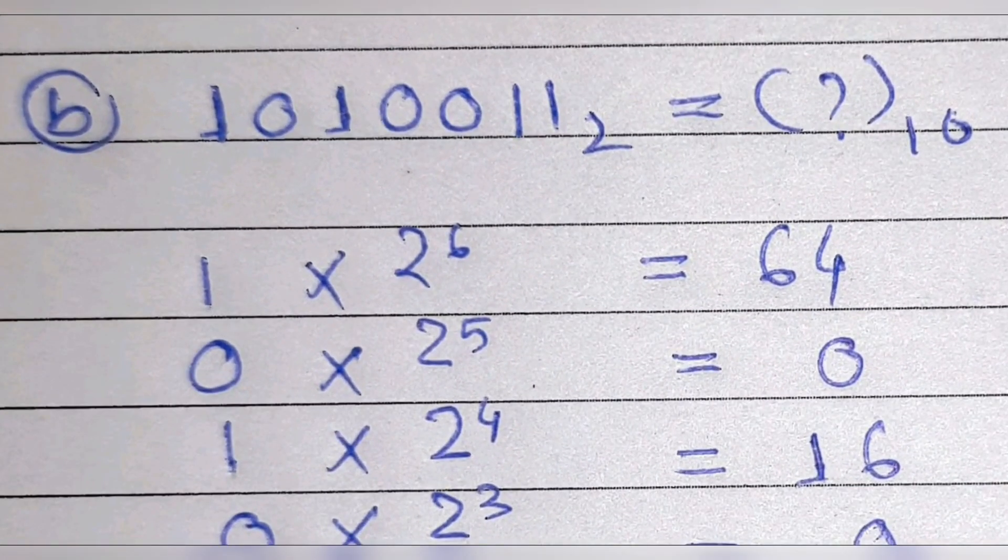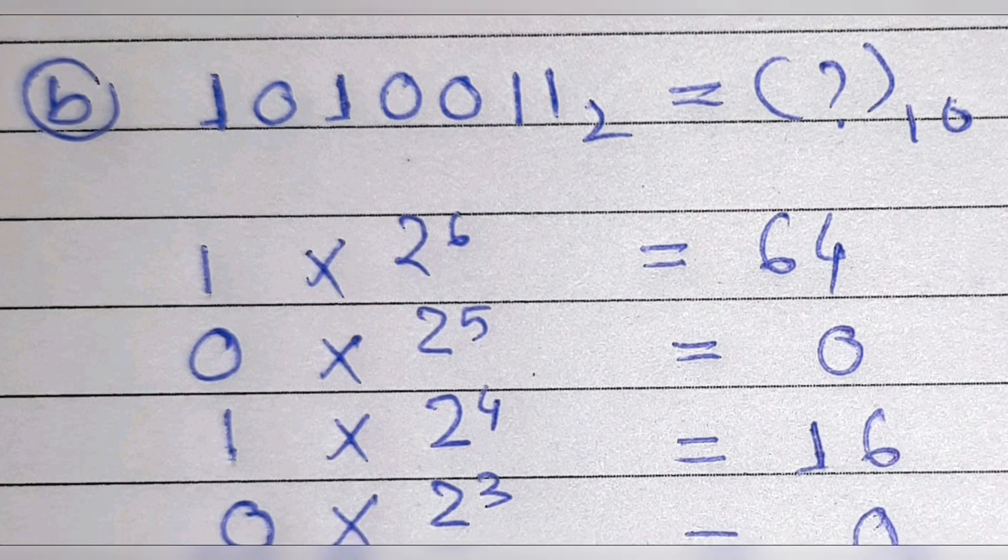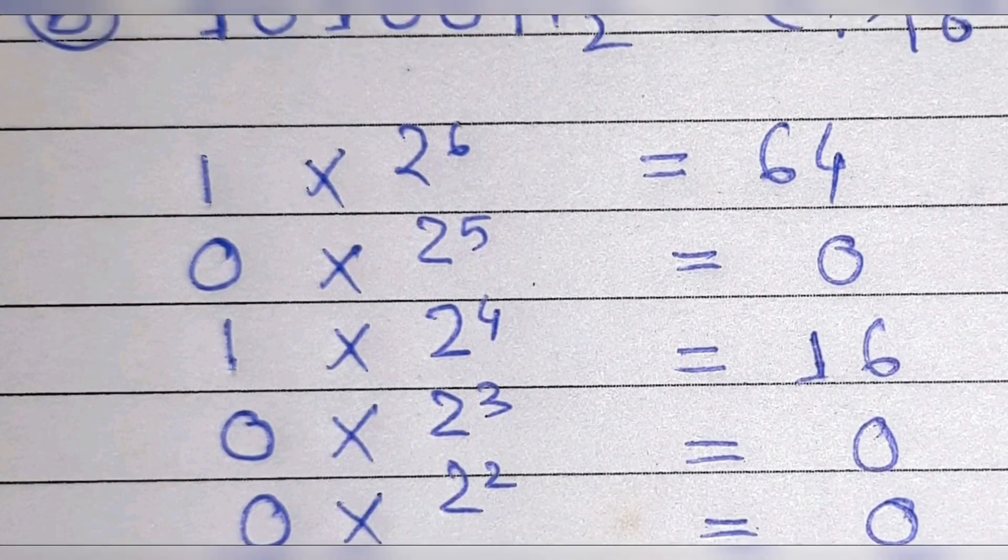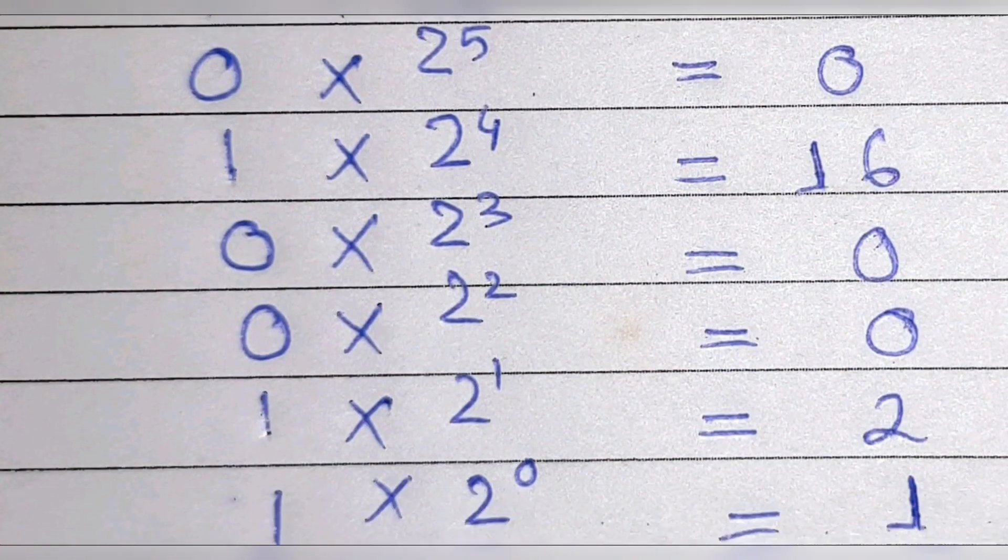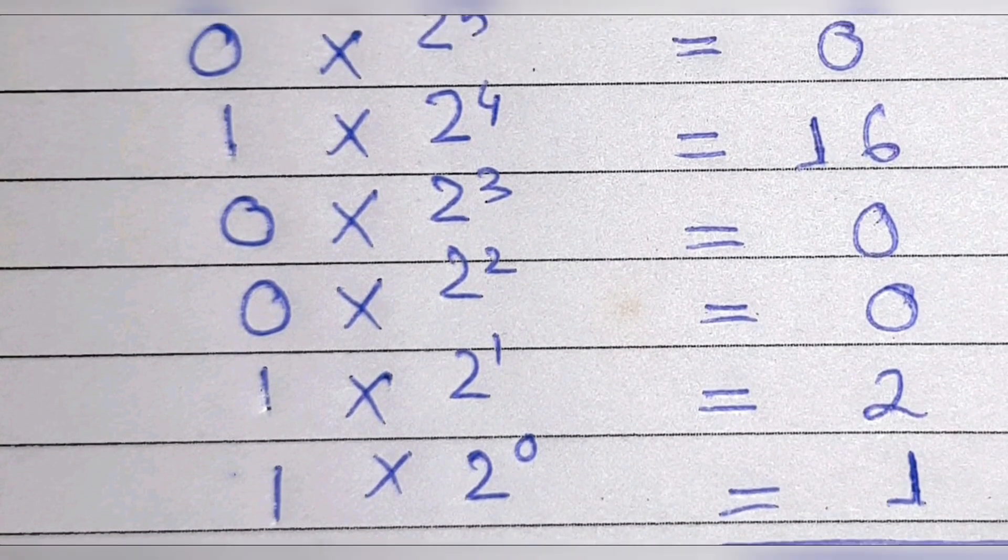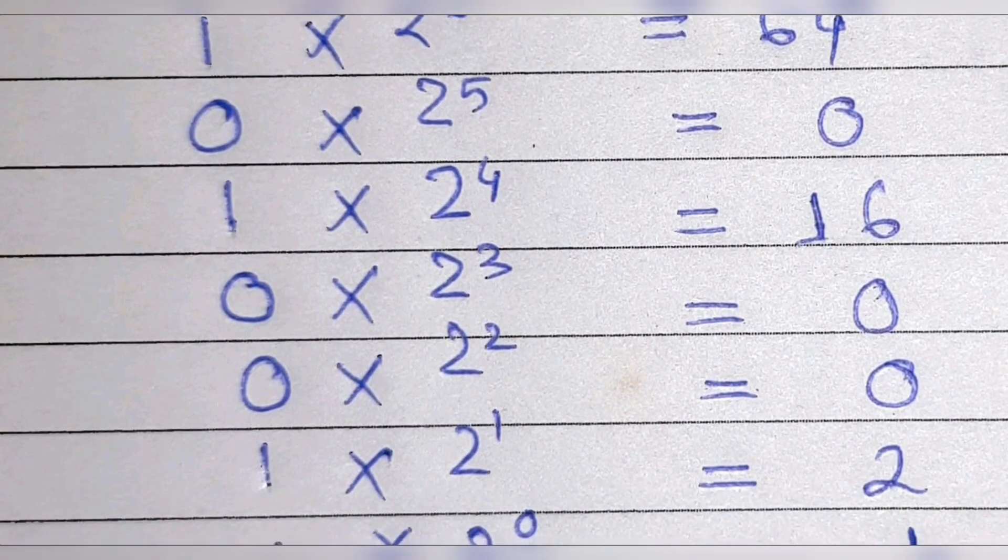Number two, 1010011 - this one we have to convert into decimal. For that we'll write the number in a sequence 1010011.